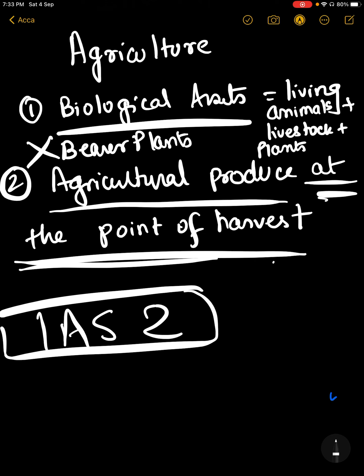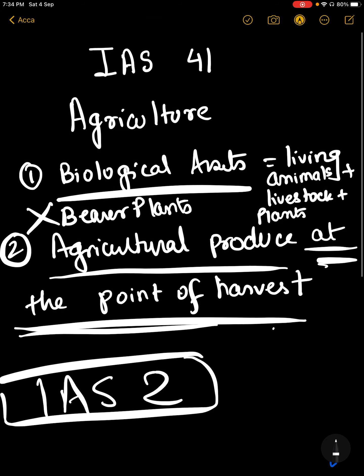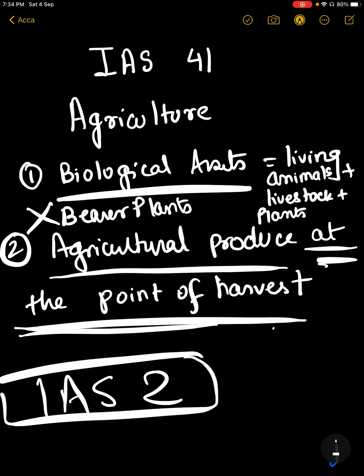For example, if there is a cow, the milk from the cow is agricultural produce. But when it becomes cheese—when it becomes processed—it comes under the inventory standard.